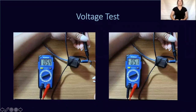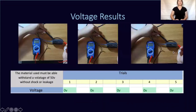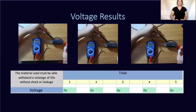Here we have the voltage test. The initial voltage of the live charging cable came out to 5.4 and 5.1. Once I placed the protective casing of my prototype around the live charging cable, from the first trial through the fifth trial there was no voltage detected, which successfully prevents any electrical damage to the skin.